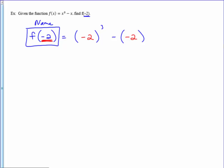The right side of the function, you need to simplify. Negative 2 cubed is negative 8. Negative times the negative is positive 2. And then simplify that, it's negative 6. When you're finished, you can say that f evaluated at negative 2 equals negative 6.